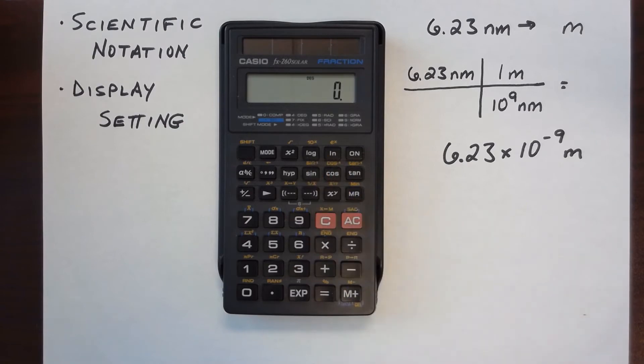The 10 to the X button takes 10 and raises it to a certain power. While this is accomplished in the scientific notation, the advantage to using the EXP button is that it connects the scientific notation with the number so that you're entering this entire number as one quantity into the calculator.